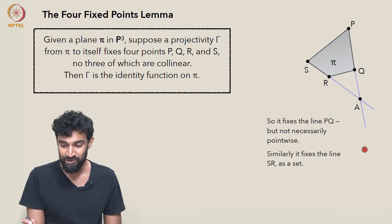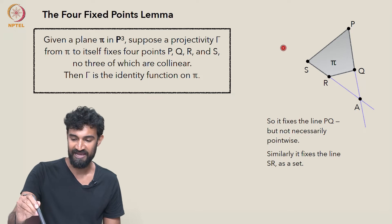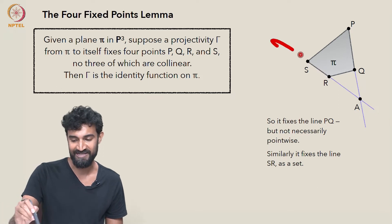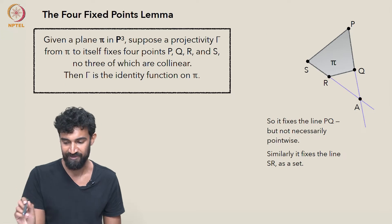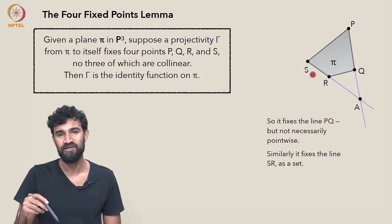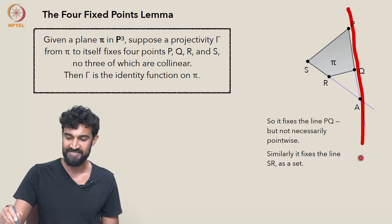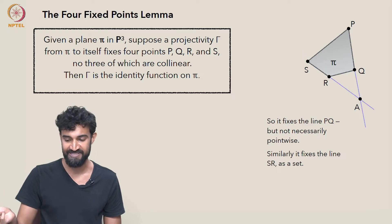It does fix the line though. By a similar argument, we know that γ fixes the line SR as a set. It sends this line SR to this same line. It also fixes S and R, but we don't know if it fixes other points.